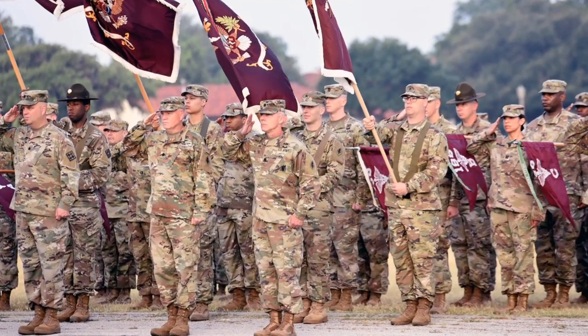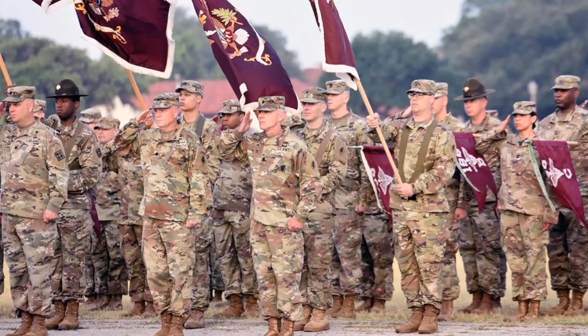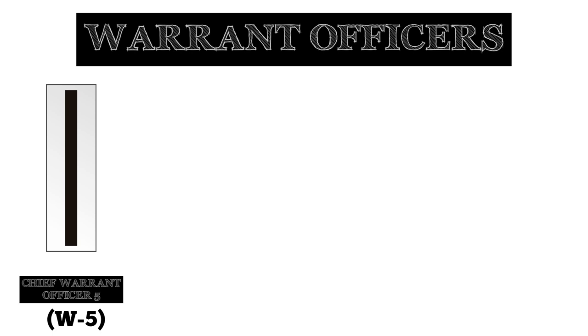Following the descending order of seniority are the ranks for warrant officers. There are five warrant officer ranks in the U.S. Army, with Chief Warrant Officer Five being the highest warrant officer rank. A Chief Warrant Officer Five is a master level technical and tactical expert that usually supports brigade, division, corps, and major command operations. They also provide leadership development, mentorship, advice, and counsel to other warrant officers and branch officers. The rank insignia of a Chief Warrant Officer Five features a silver bar with a black stripe in the center.